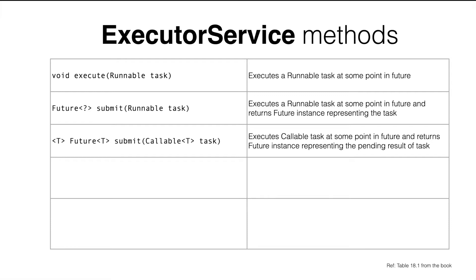The third is again a submit method, but this one takes a Callable task as input. Callable is very similar to Runnable; the difference is that a Callable task will return something back. This submit method returns a Future object, and we can use the Future object to get the value returned from the Callable.